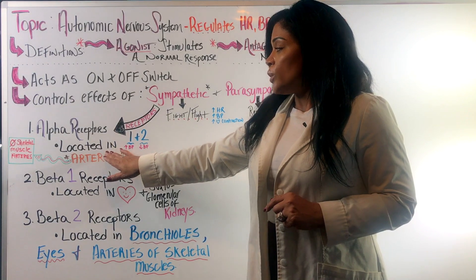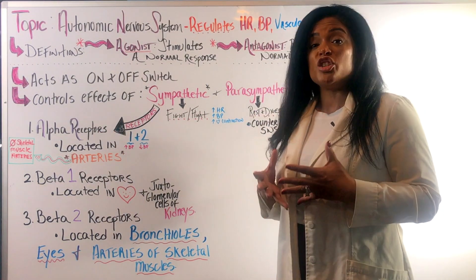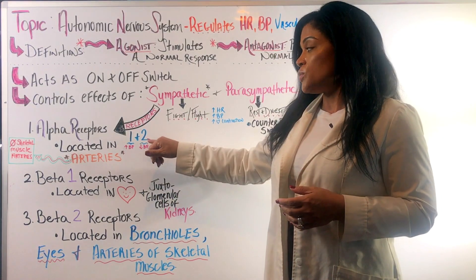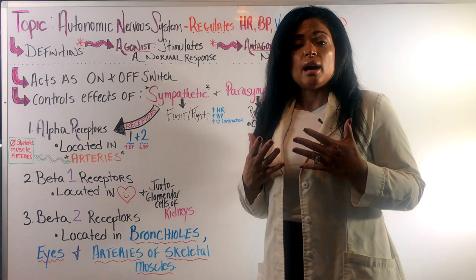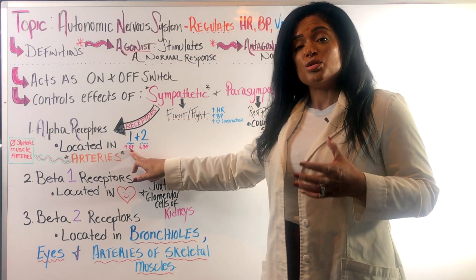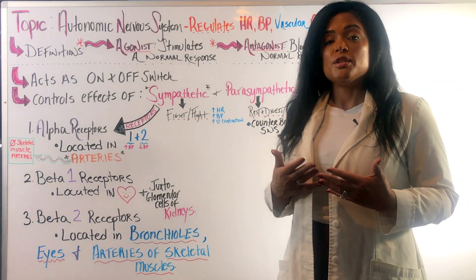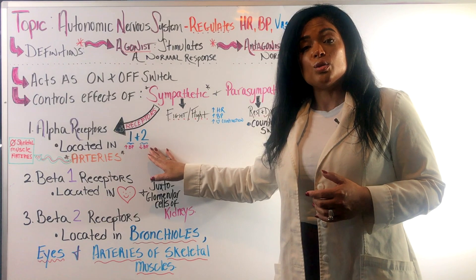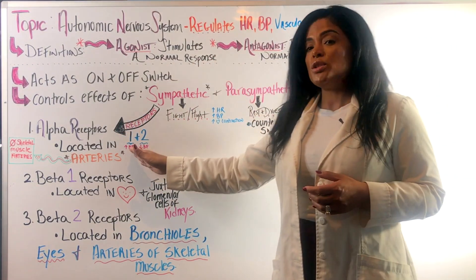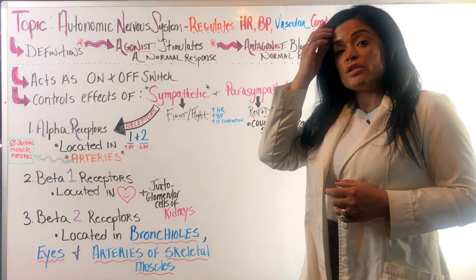Your alpha receptors are located in your arteries. Alpha-1 receptors are in charge of vasoconstriction, which is why blood pressure rises. Your alpha-2 receptors are in charge of vasodilation, which is why blood pressure decreases. If I give a patient an alpha-1 receptor blocker or antagonist, instead of vasoconstricting it's going to vasodilate. If I give an alpha-2 receptor antagonist, instead of vasodilation it's going to vasoconstrict. An alpha-1 receptor agonist will increase blood pressure, and an alpha-2 agonist will decrease it, because it stimulates the normal response of that receptor.